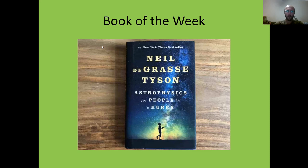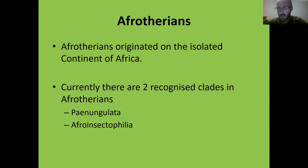Recapping Afrotherians: Afrotherians are those animals that originated on the isolated continent of Africa. Africa was isolated for well over 30 million years, and because of this a variety of organisms evolved with no competition from Asia, the Americas, Australasia, or Europe. Currently there are two recognized clades of Afrotherians.